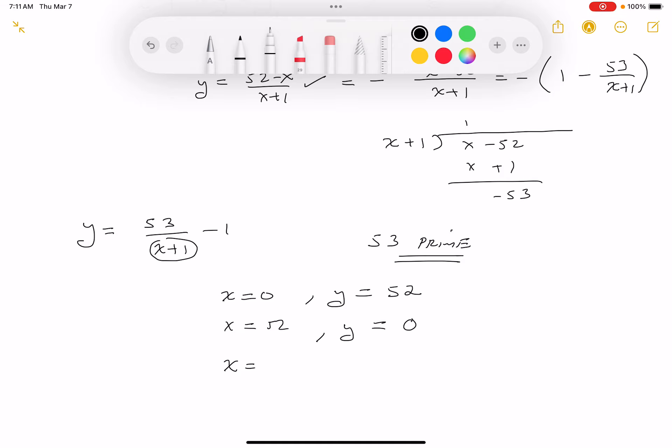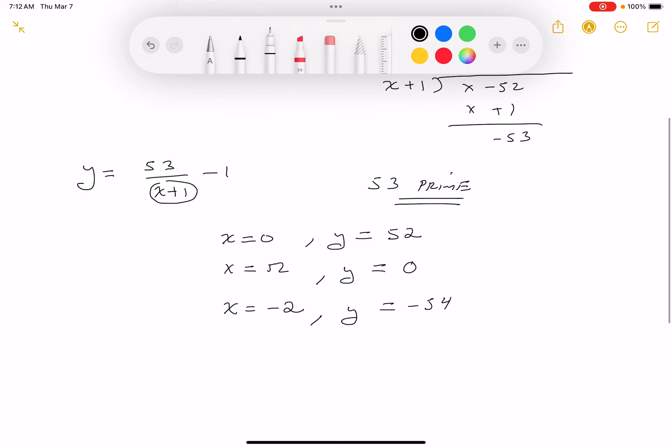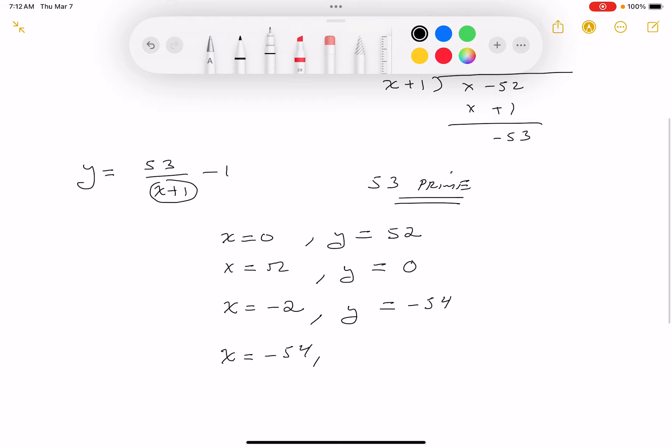For example, I could take x to be—I'm going to use integer values—minus 2. If you did that, if you put minus 2 down there, you get 53 over minus 1, which is minus 53, and minus 53 minus 1 is minus 54. What else could I do? There's another one. I'm going to say x equals minus 54 because minus 54 plus 1 is minus 53, and 53 divided by minus 53 is minus 1, and minus 1 minus 1 is minus 2.